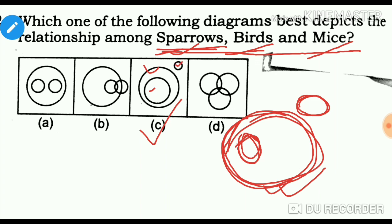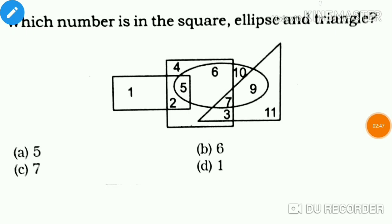The circle is a mouse. If you want to see the type of mouse in the circle, I will show you the same here. This is a square, rectangle, and circle, which is the geometrical figure.